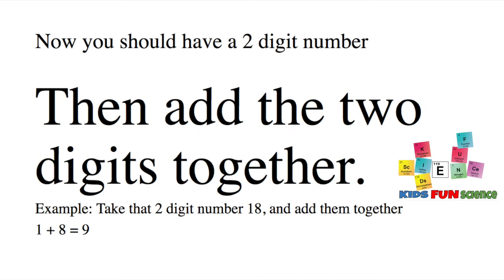Most of you should have a two-digit number. Take those two digits and add them together. See the example below. If you have a one-digit number, just add it to 0.